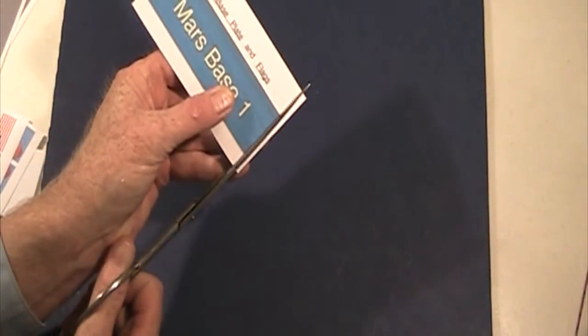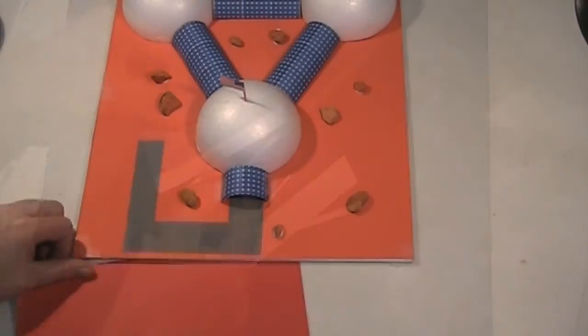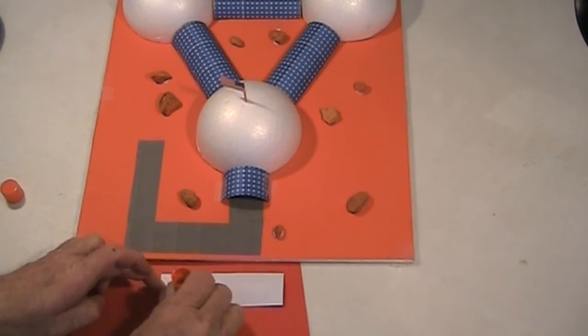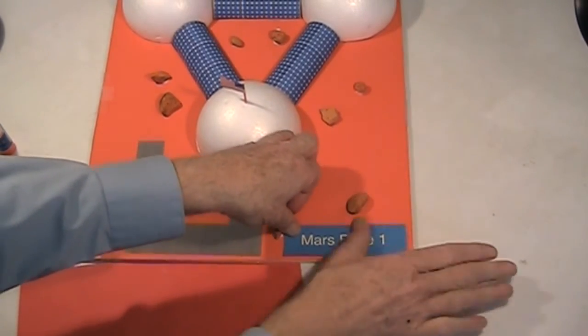In your papers I've also included a Mars Base One label. This you can cut out, put some glue stick on the back of that, and then leave some room in the front of the model that you can put this down and that'll be the label for your Mars Base One.